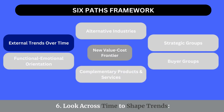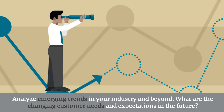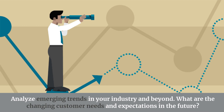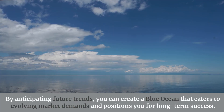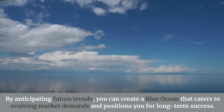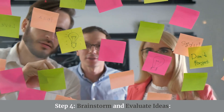Path 6: Look across time to shape trends. Analyze emerging trends in your industry and beyond. What are the changing customer needs and expectations in the future? By anticipating future trends, you can create a blue ocean that caters to evolving market demands and positions you for long-term success.